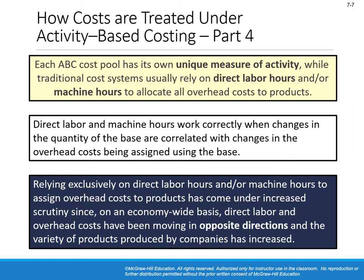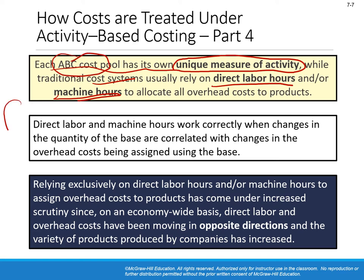Each ABC cost pool has its own unique measure of activity, while traditional cost systems — job order costing in chapters 2 and 3, or process costing — usually rely on direct labor hours and/or machine hours. In the ABC costing system, each cost pool or group of costs is driven by the same activity measure. You can have cost pools one, two, three, four, each with a different activity base.